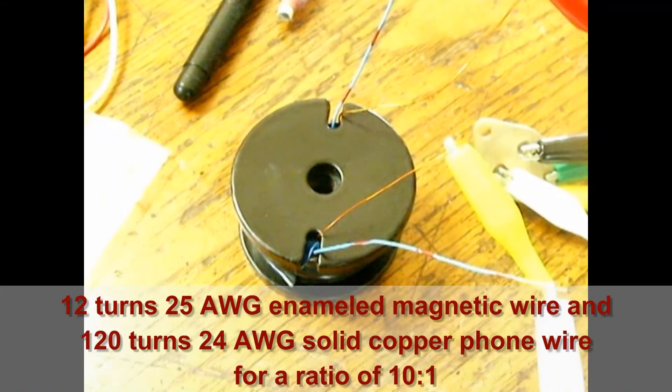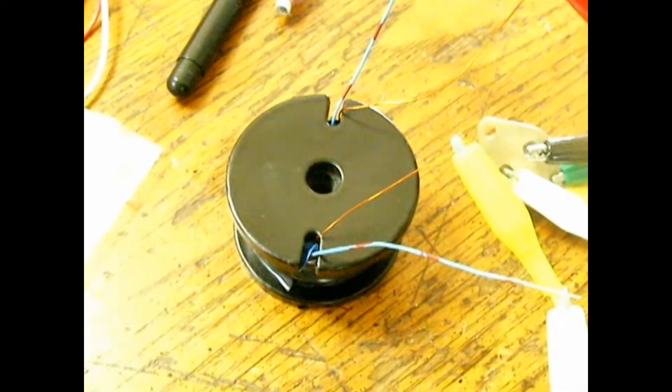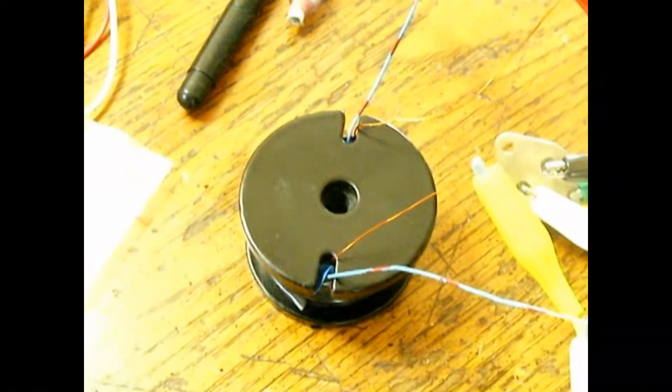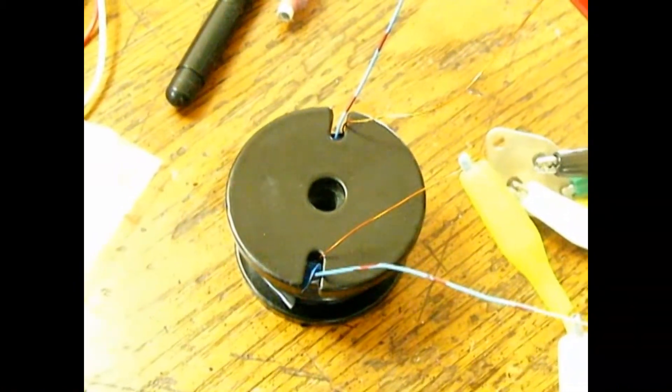itself is bare enamel wire, 25 gauge, 12 turns on the bobbin, and then I taped it so it won't loosen.